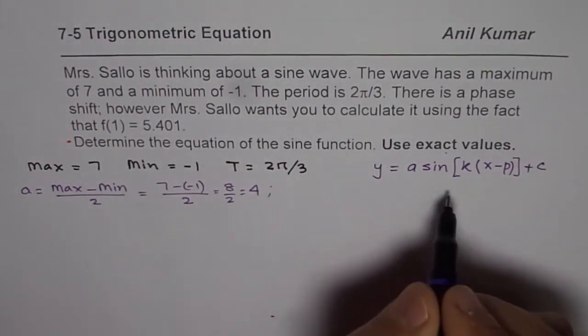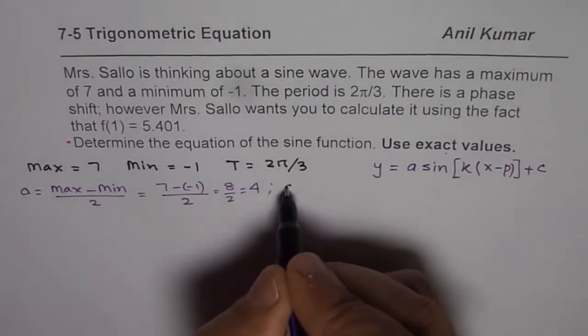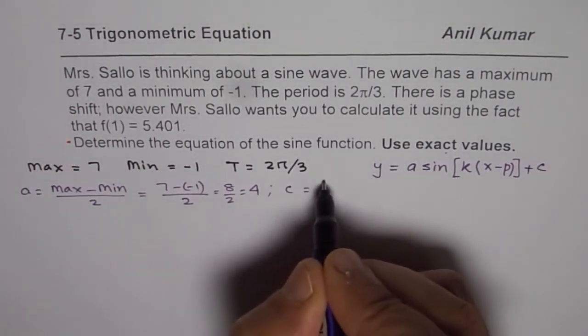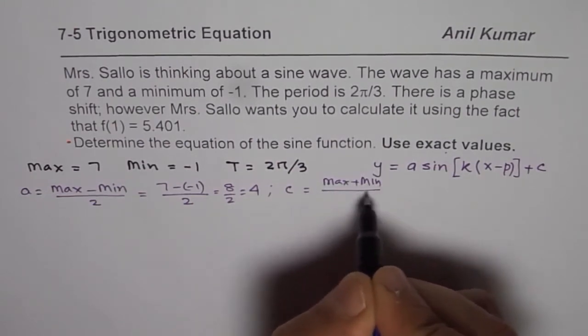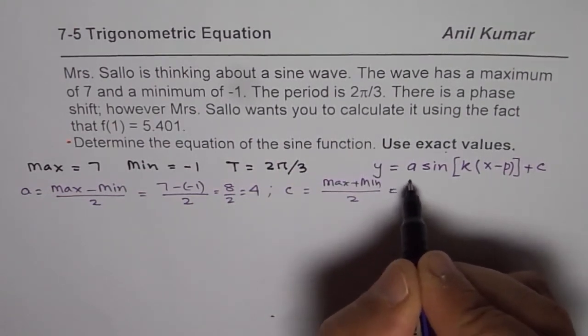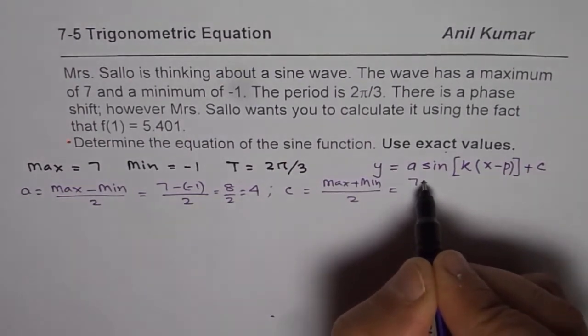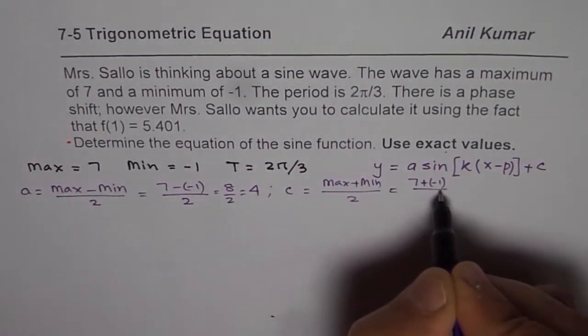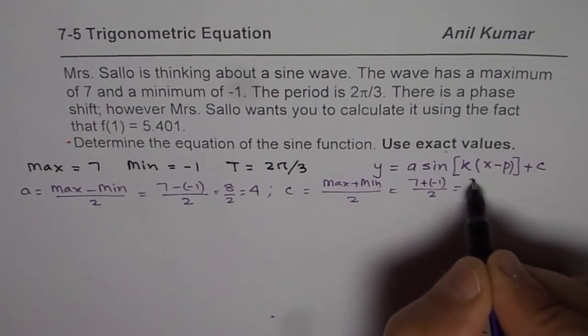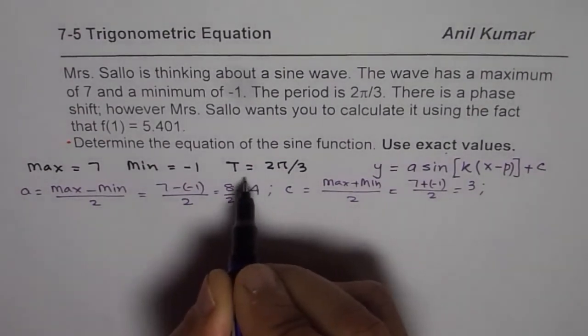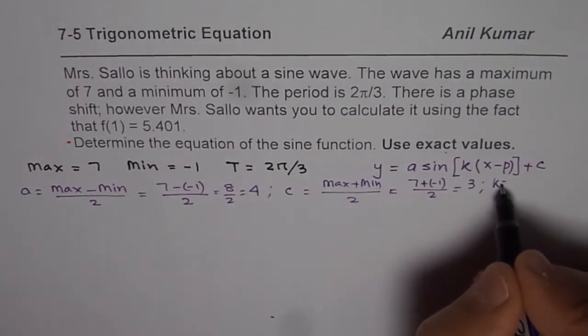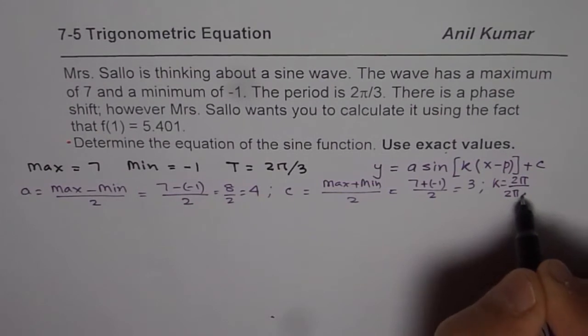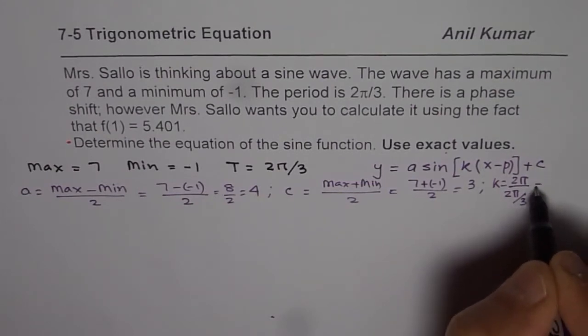We can find c from here, which is the average value: maximum plus minimum divided by 2. In this case it will be 7 plus (-1) divided by 2 which is 6 divided by 2 as 3. And k is 2π by T, so k equals 2π divided by 2π/3, which is 3 for us.